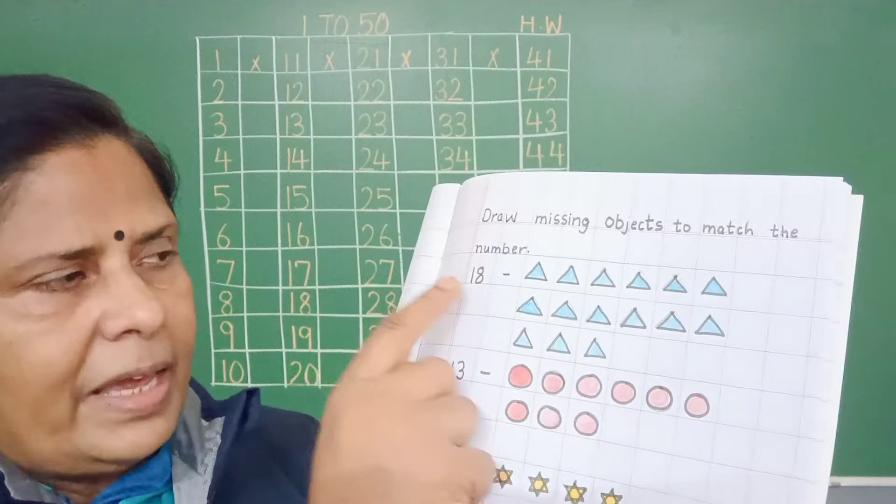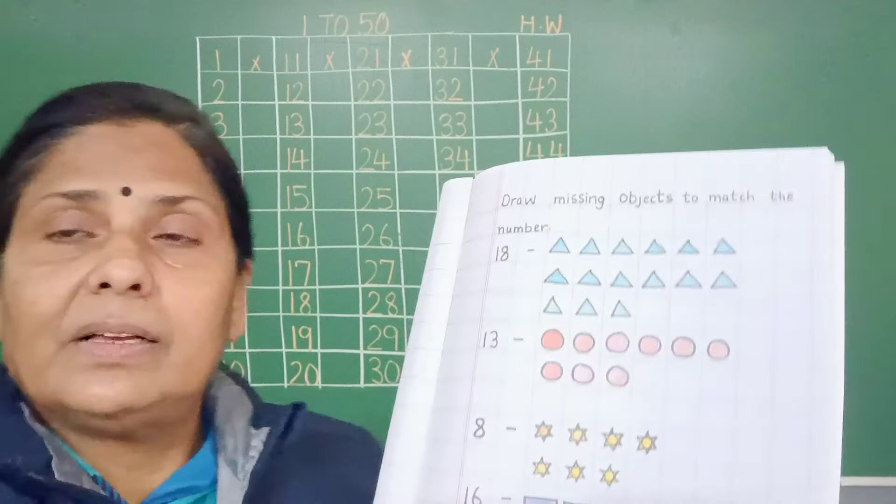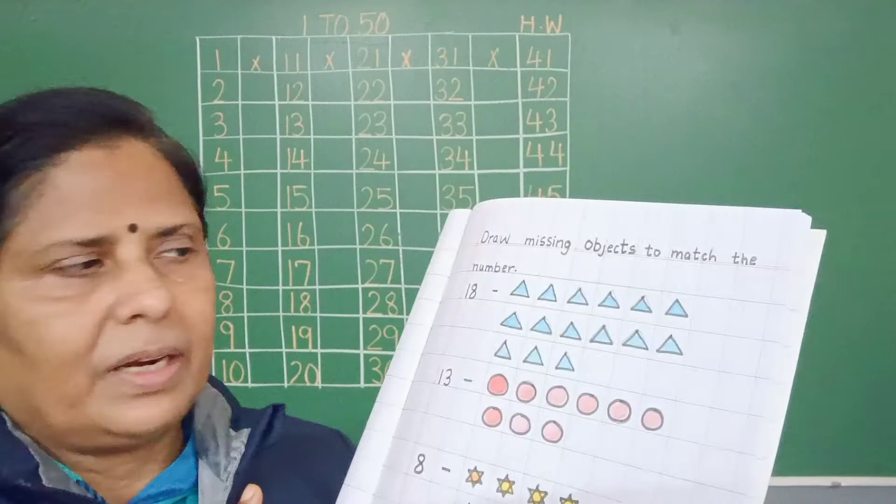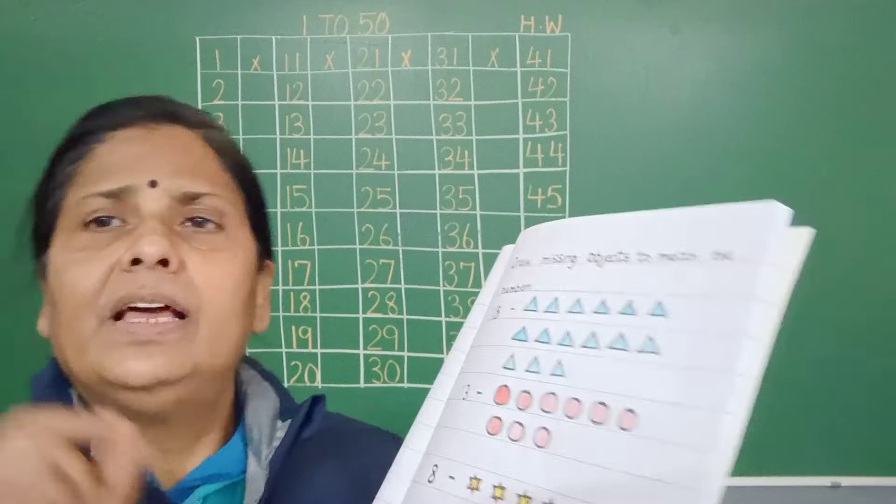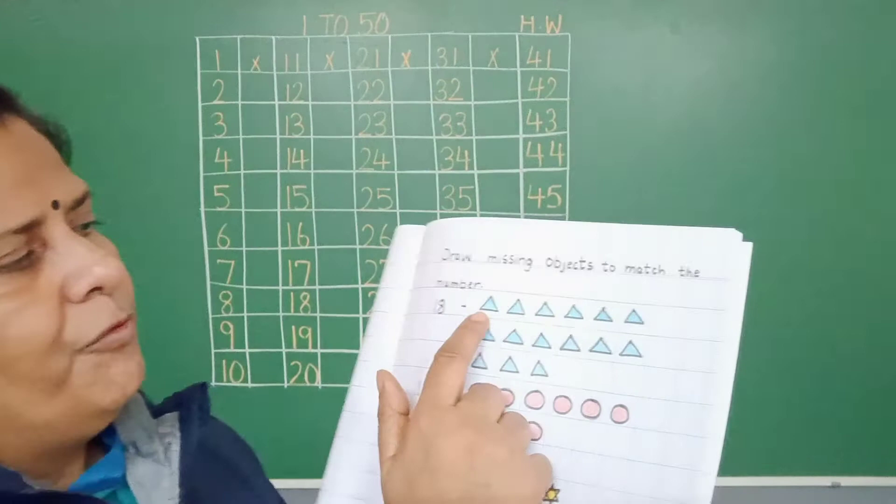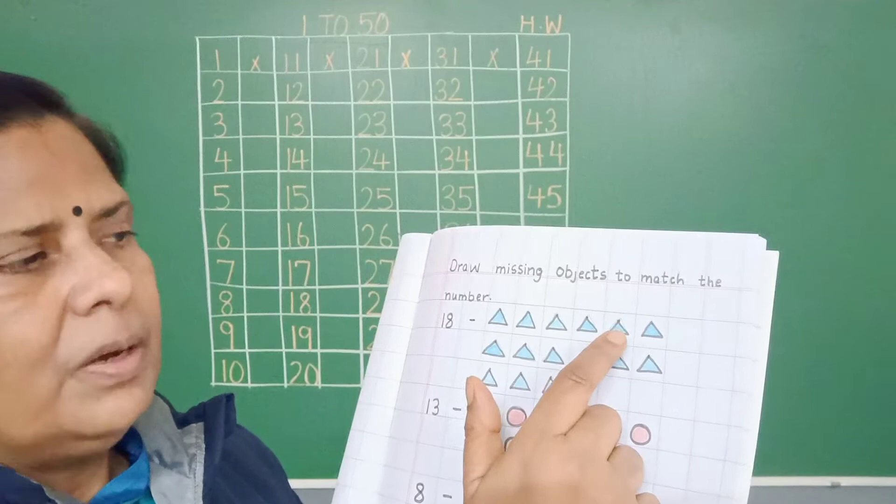How do you do? Like 18 number is there. I have drawn triangles. Few triangles are missing. Which triangles you have to draw? First of all, count the triangles. These triangles are less. How many triangles are less? How many triangles you have to draw?